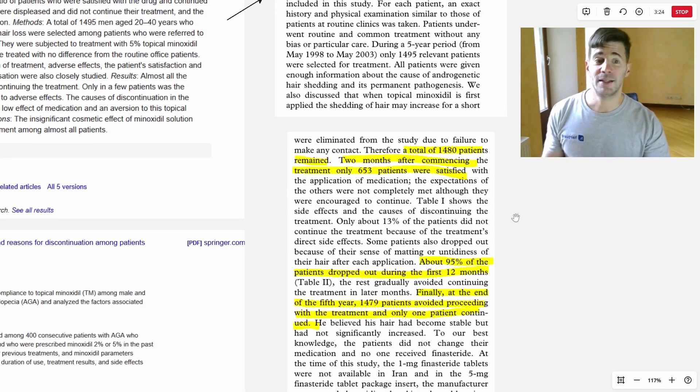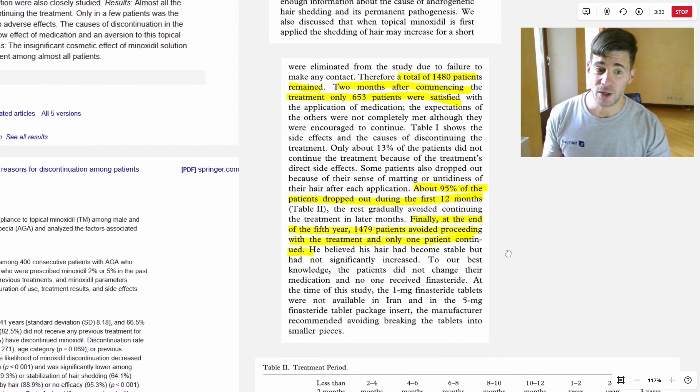So what these doctors did, they followed up these people over time who weren't participating in any clinical trial. 15 people quickly dropped out, leaving 1,480 patients in the trial. Two months in, only 653 patients were satisfied. They gradually started dropping out. And by the end of the first 12 months, 95% of the patients had dropped out. And by the fifth year, five years in, out of 1,480 patients, one—that's 0.1%—still stayed on treatment.